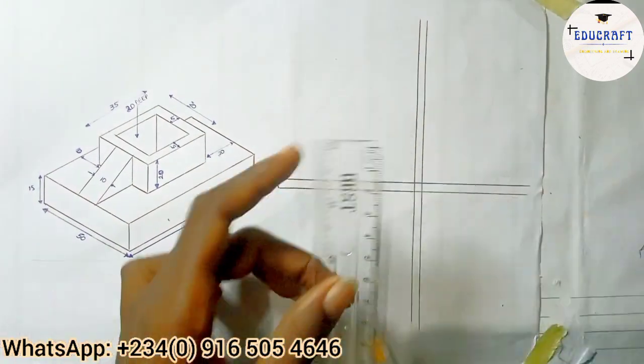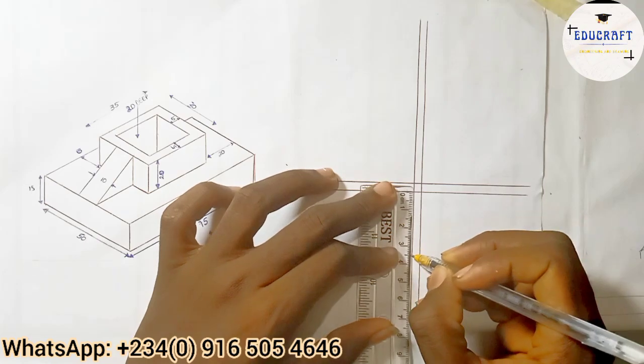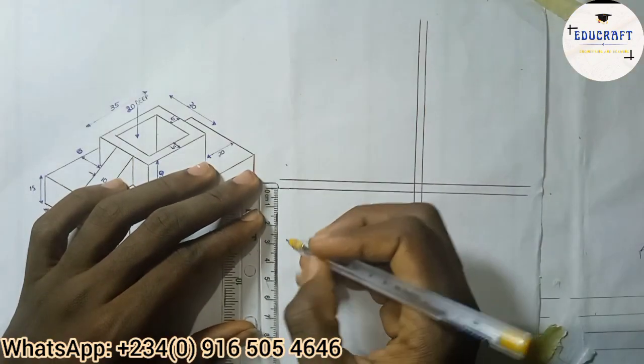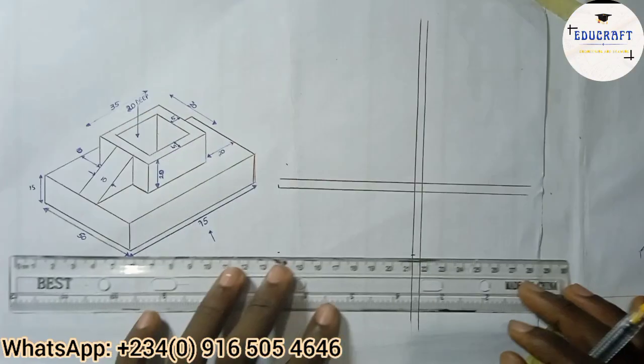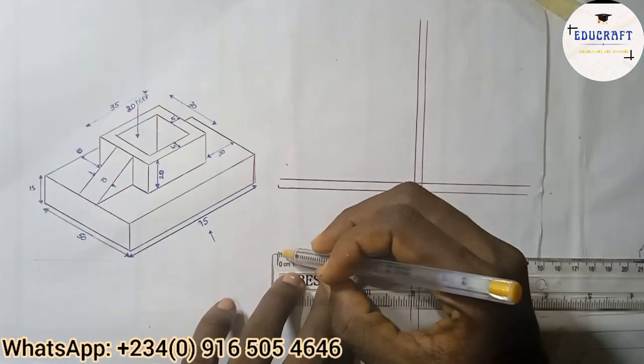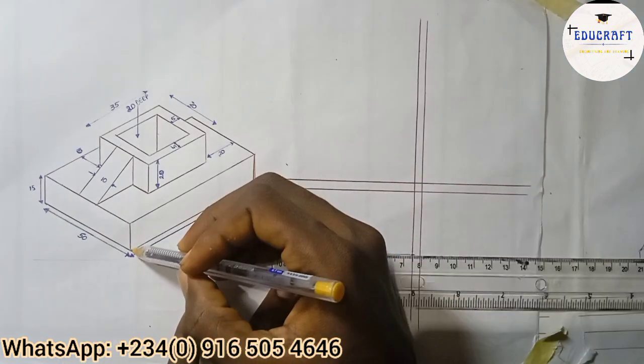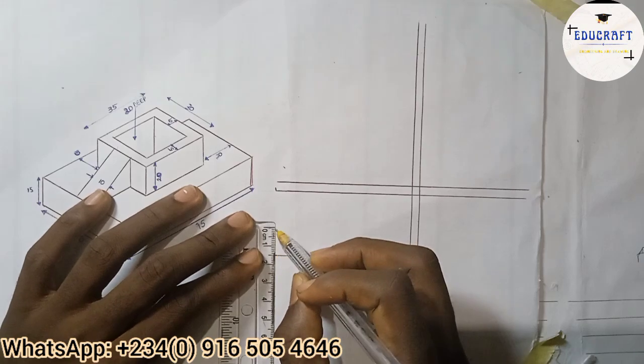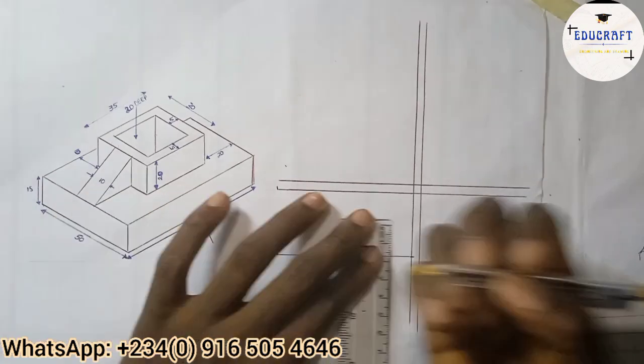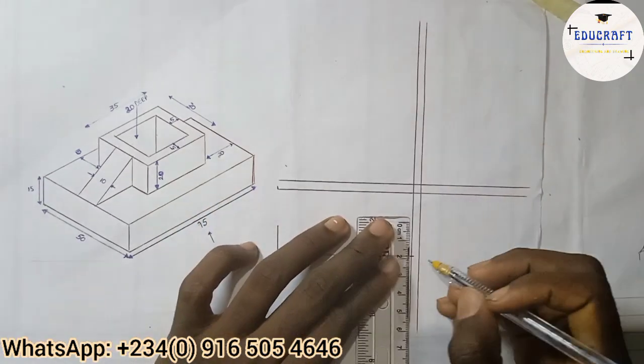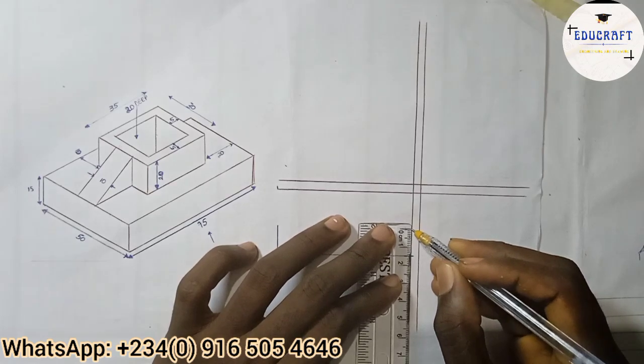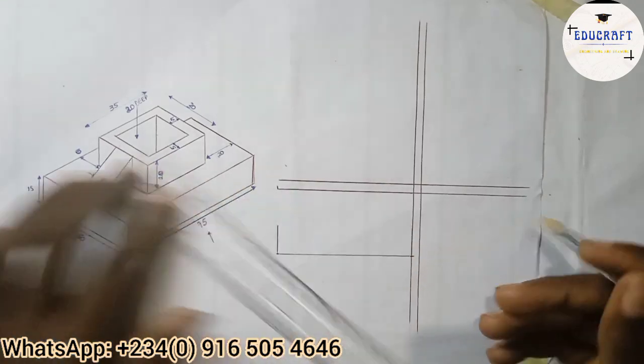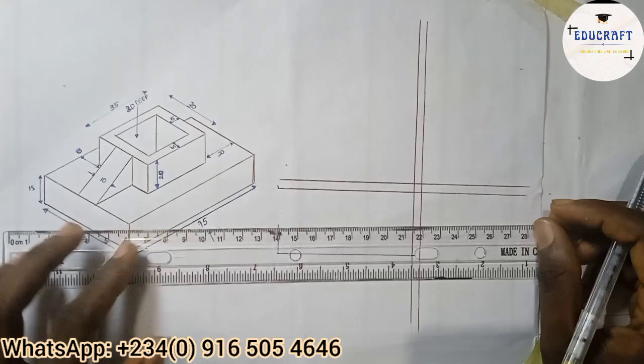Okay, so I'll come down here and mark 35 also, the same thing to this part. I will draw this part here. I'll come up with 15, and here come up with 15 too. So I'm coming up with 15 and I'll literally join the two points together.